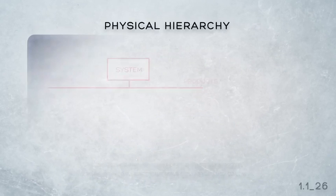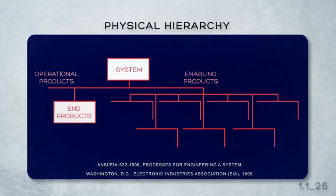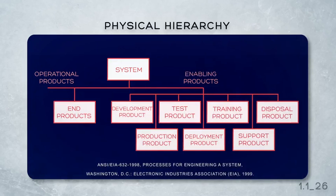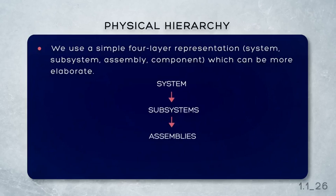In a physical sense, a system can be considered to comprise operational or end products and enabling products. The end products of the system are also normally described in a hierarchy. Here we use a simple four-layer hierarchy: the top level is the system, which comprises subsystems, each of which comprises a number of assemblies, each of which comprises a number of components. This forms a physical hierarchy of the system. There are other terms in use, but these are probably the most common.